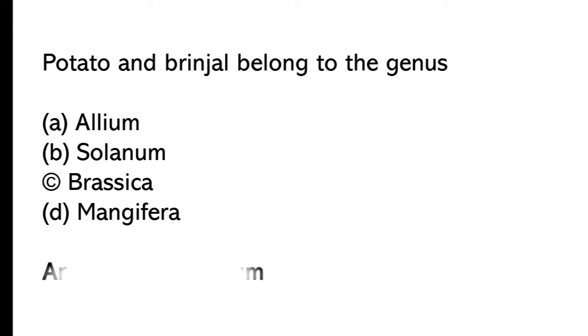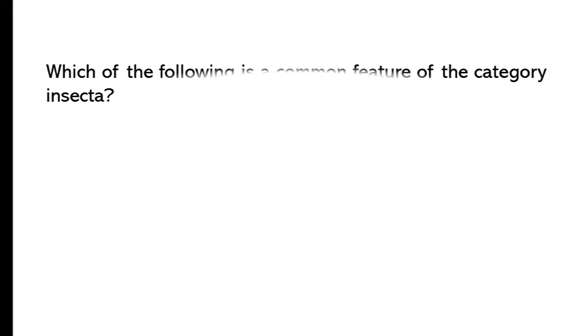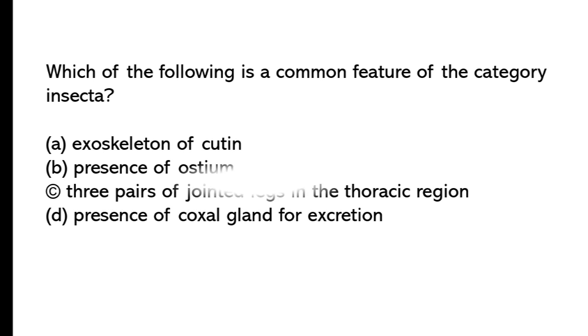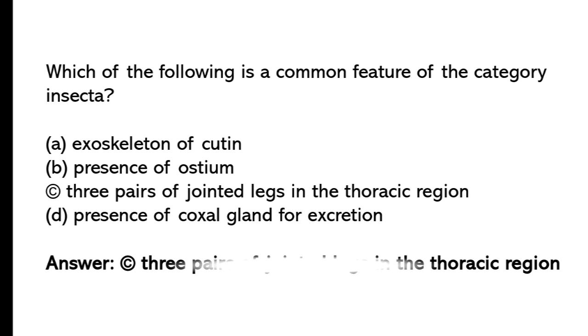Potato and Brinjal belong to the genus: So the correct answer is option B, Solanum. Which of the following is a common feature of the category Insecta? So the correct answer is option C, Three pairs of jointed legs in the thoracic region.